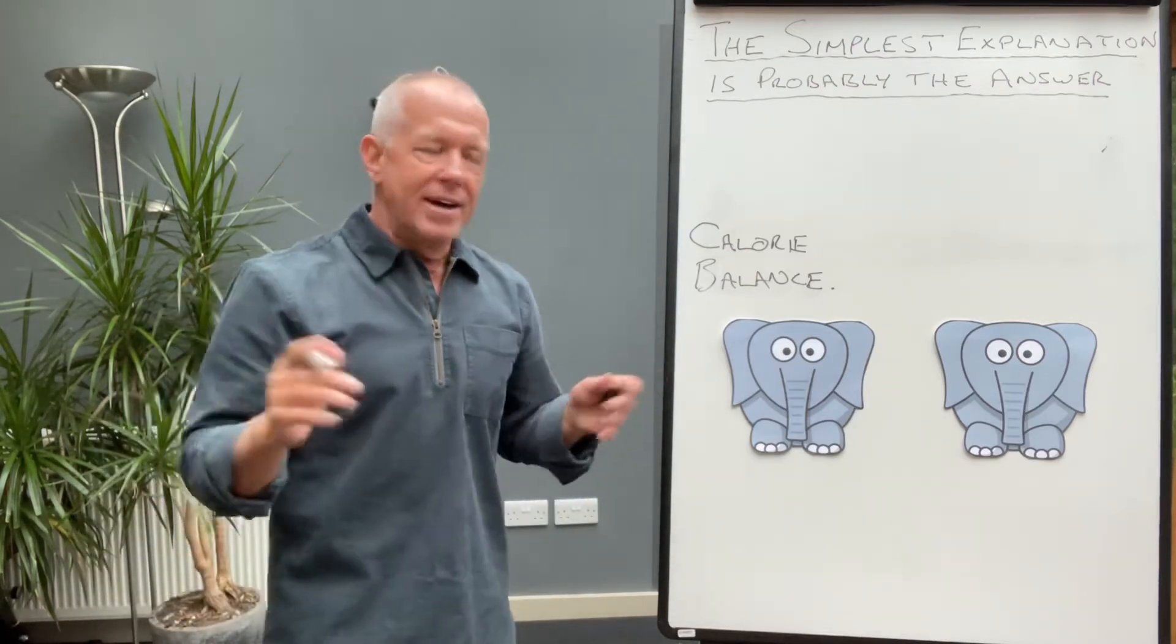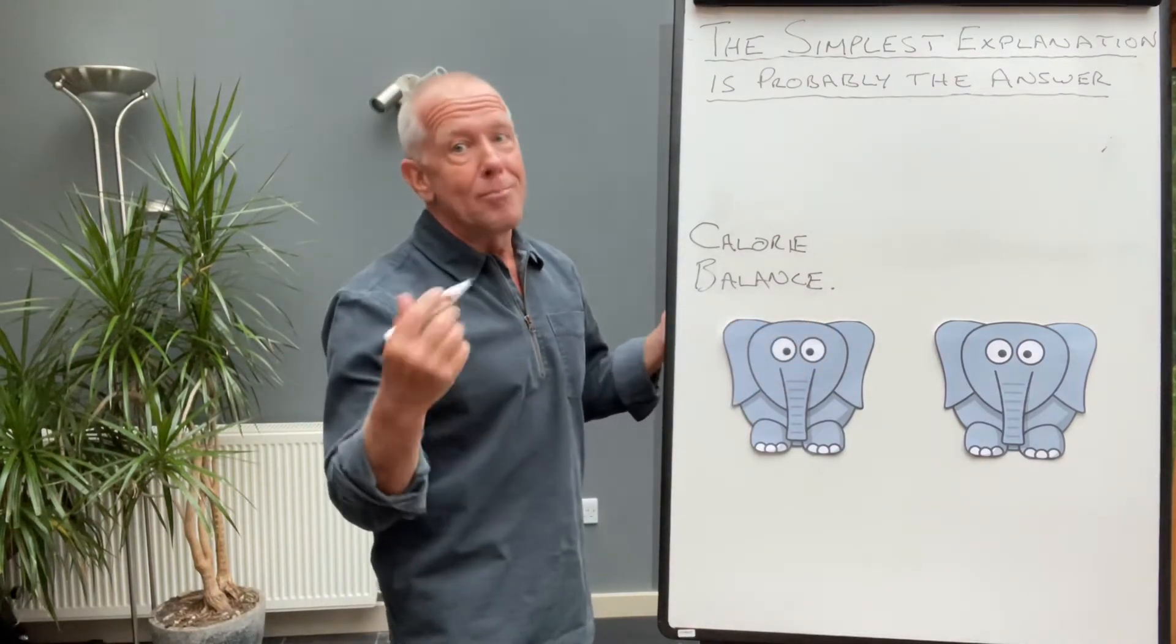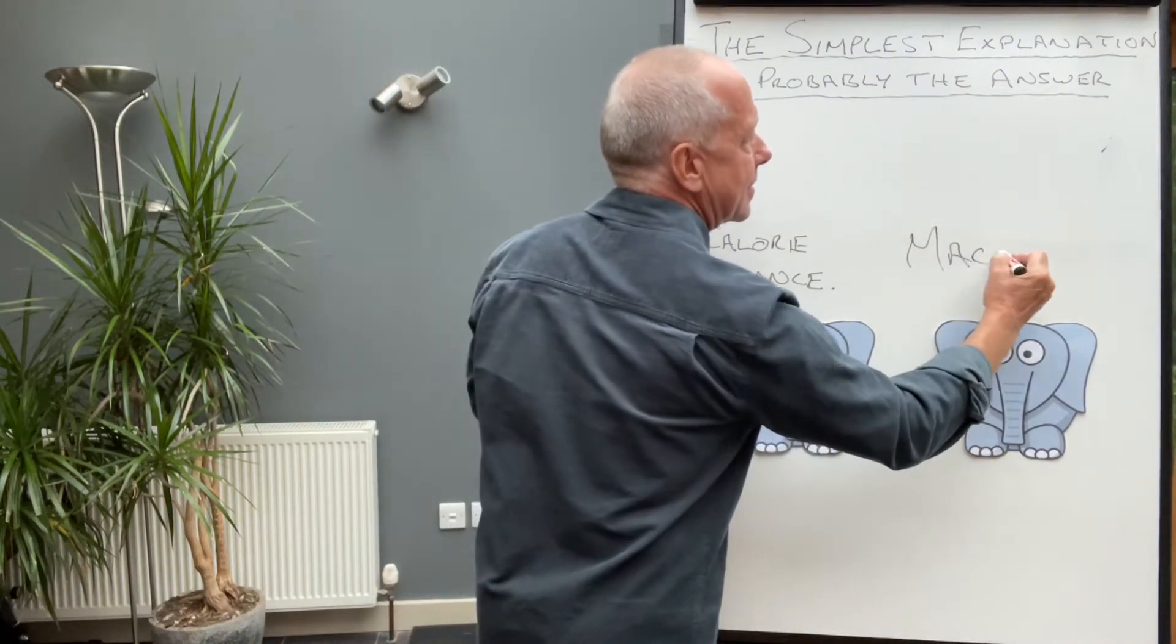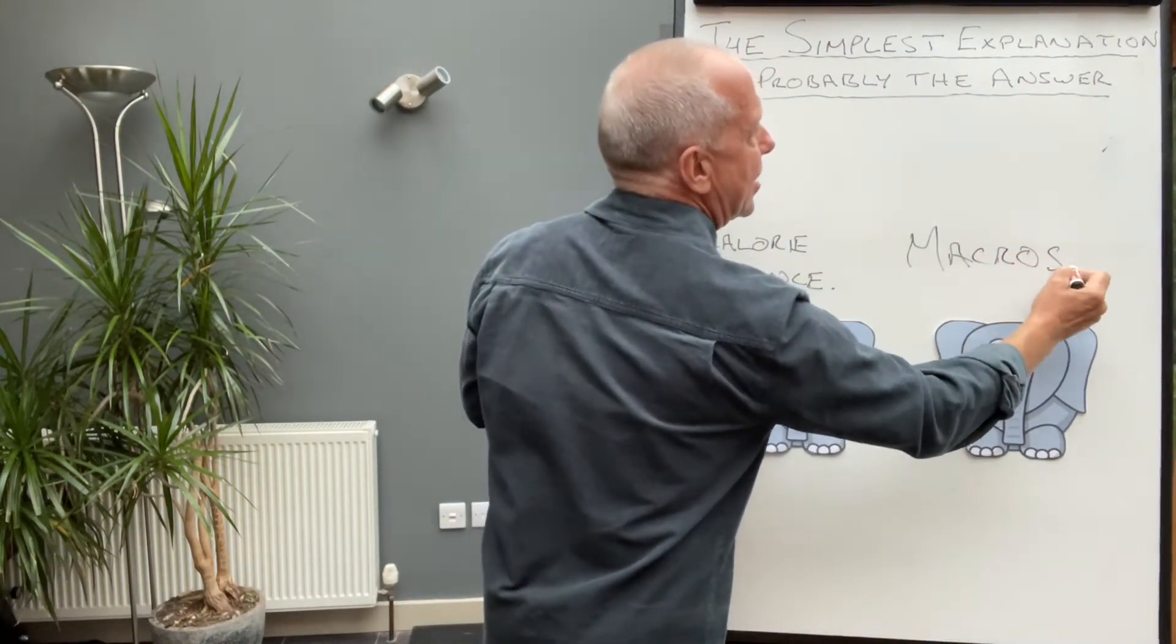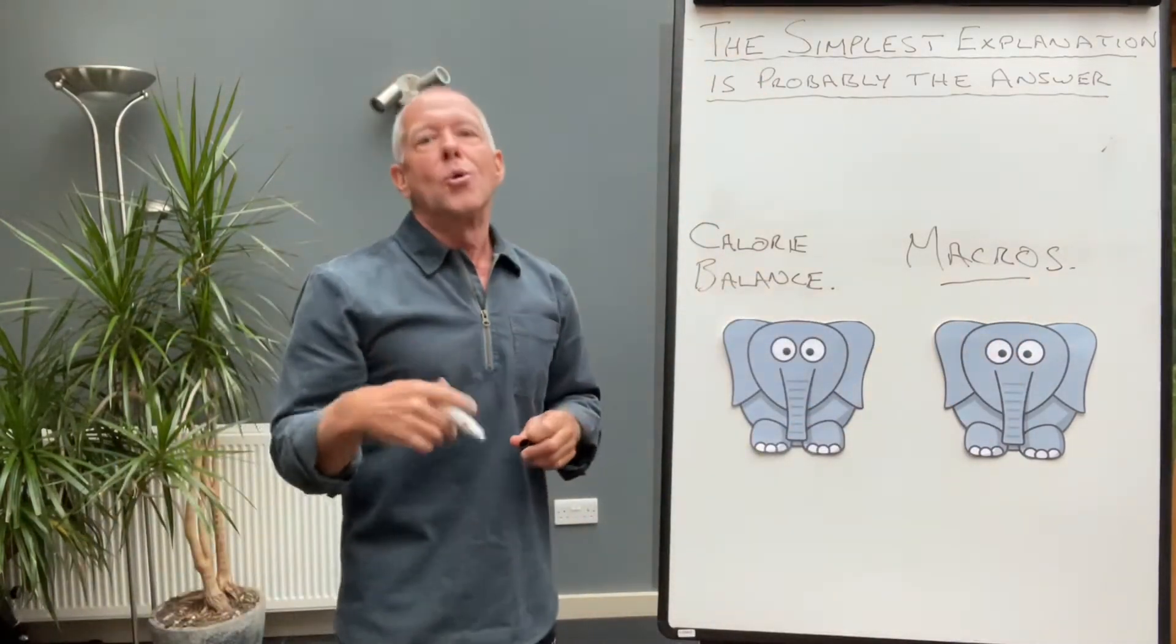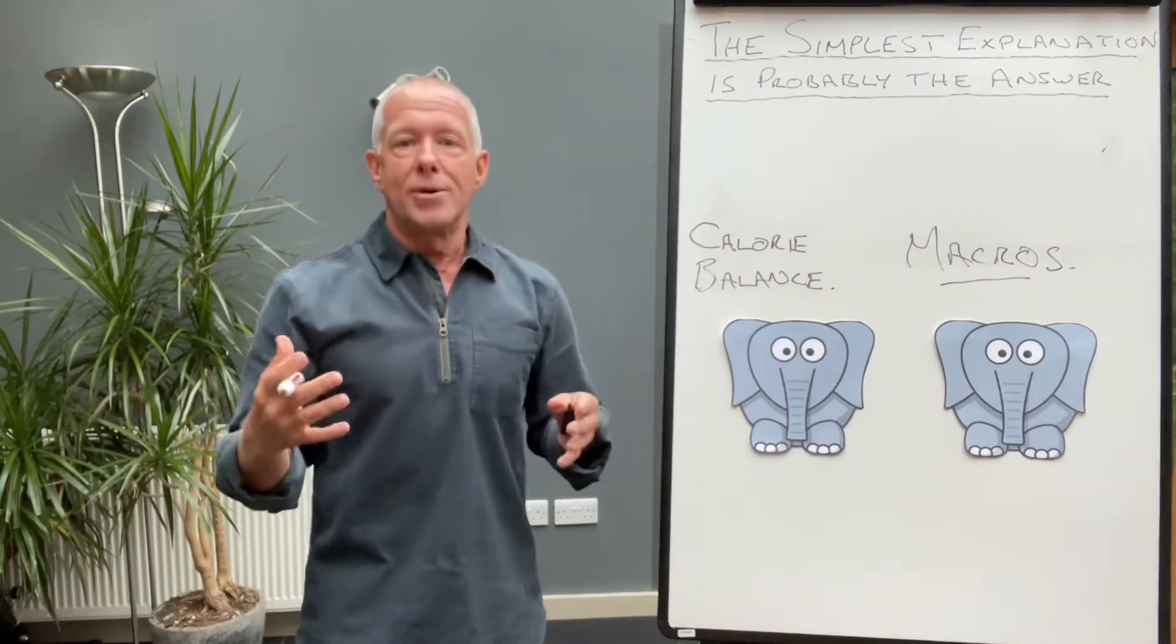And the other elephant, his brother or sister, is macronutrient balance. So I'm just going to put macros. Those are the three huge components of all foods, whether they're proteins, fats, or carbohydrates. And they will tend to dictate your body composition.